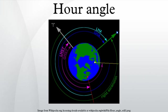The hour angle of a point is the angle between two planes, one containing the Earth's axis and the zenith, and the other containing the Earth's axis and the given point.